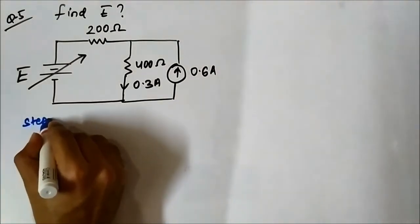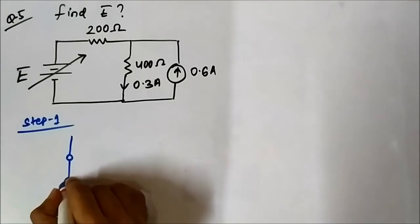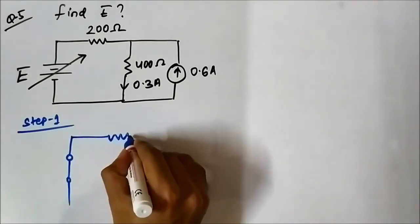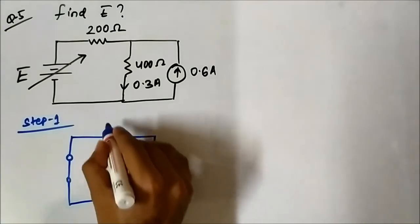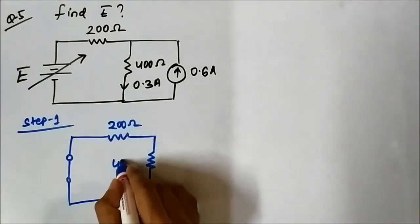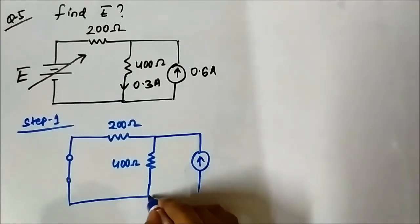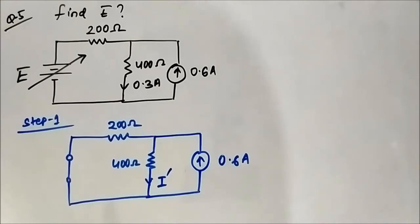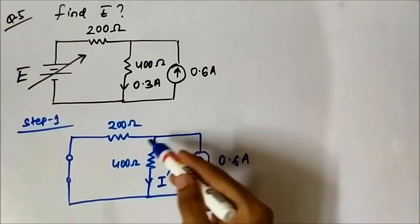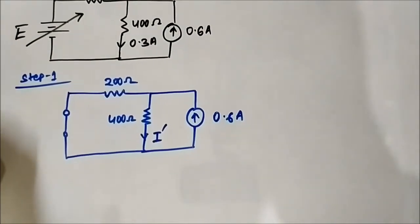In step one, we short circuit the voltage source. We have 200 ohm, 400 ohm, and the 0.6 ampere current source. We need to determine this current — let's call it I dash. We will apply the current division rule because the circuit is in a two-resistor form and the current gets divided between them. So we apply current division rule to determine the value of I dash.